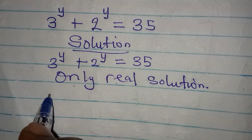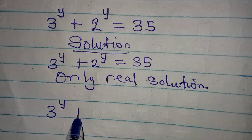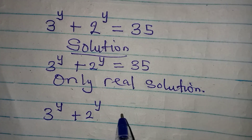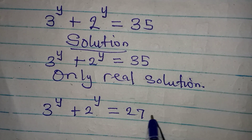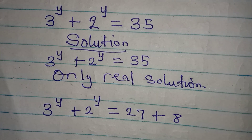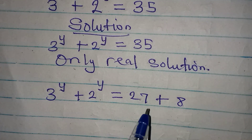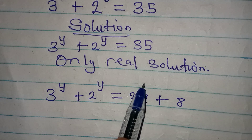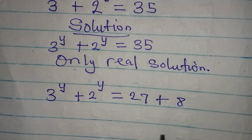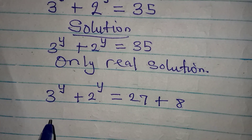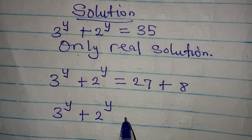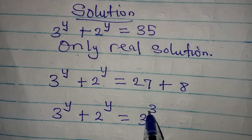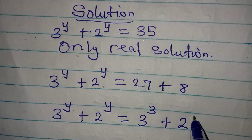Let's break it down. We have 3 to the power of y plus 2 to the power of y equal to 35, which is the same as 27 plus 8. Now, 27 is 3 to the power of 3 and 8 is 2 to the power of 3 — we can express both in index form. So 3^y + 2^y equals 3^3 + 2^3.